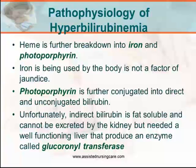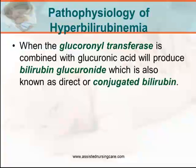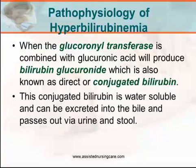Unfortunately, this indirect bilirubin is fat-soluble and cannot be excreted by the kidney. It requires a well-functioning liver that produces an enzyme called glucuronyl transferase. When glucuronyl transferase is combined with glucuronic acid, it produces bilirubin glucuronide, known as direct or conjugated bilirubin. This conjugated bilirubin is water-soluble and can be excreted into the bile and passes out through urine and stool.